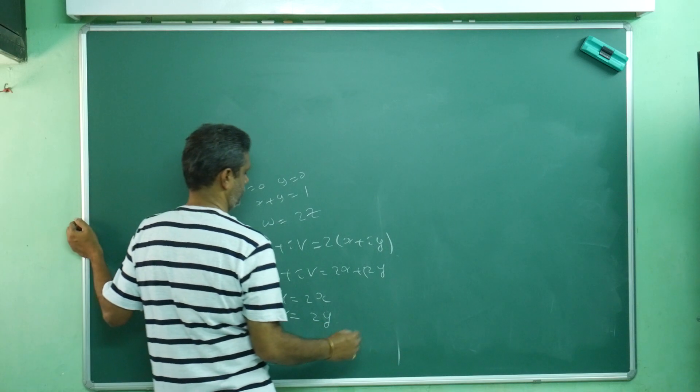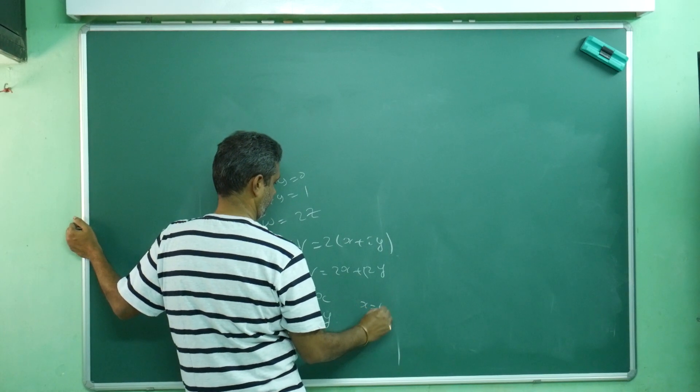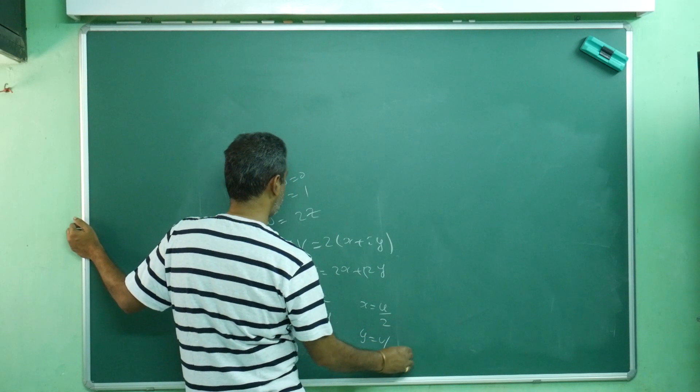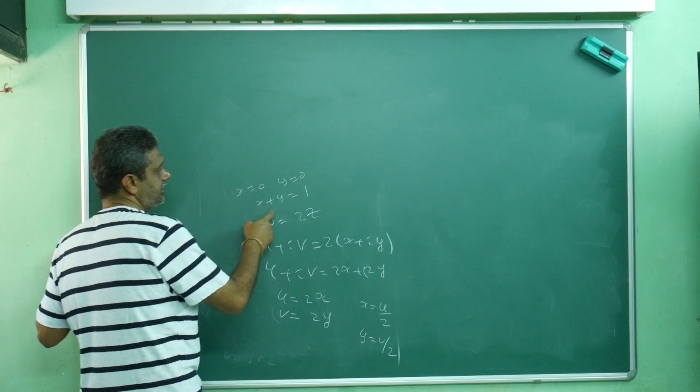Now, x = u/2, y = v/2. In my hand available x + y.